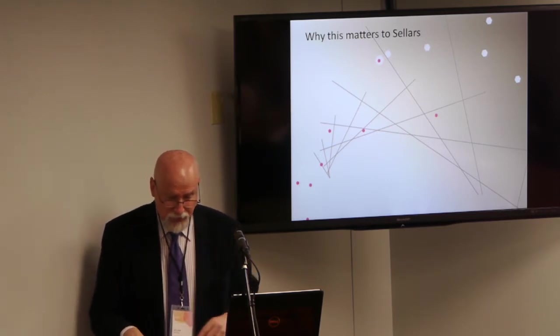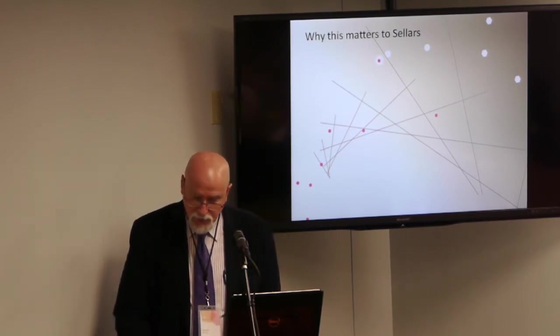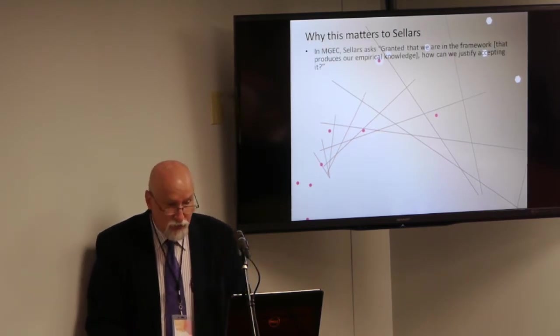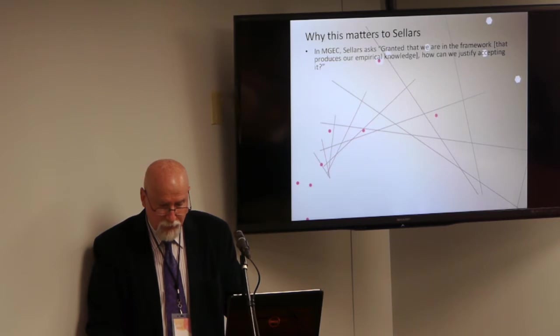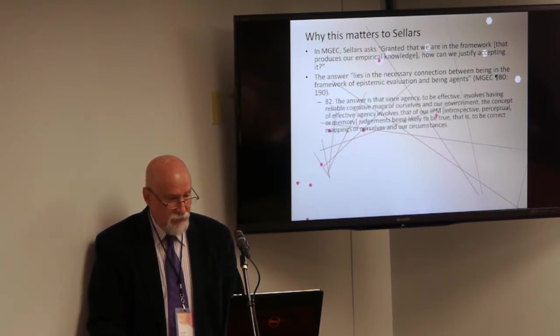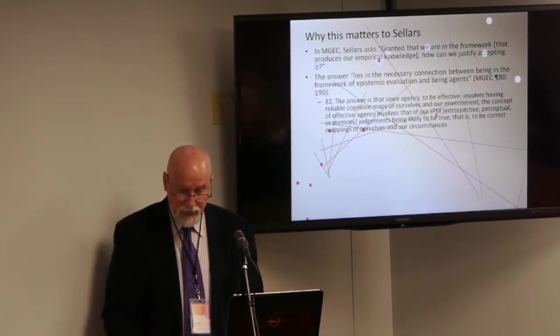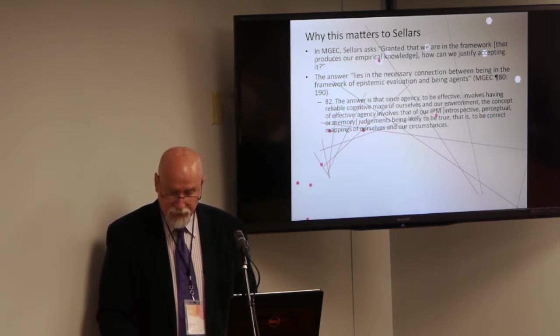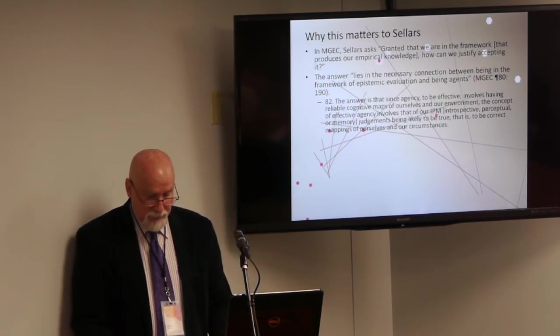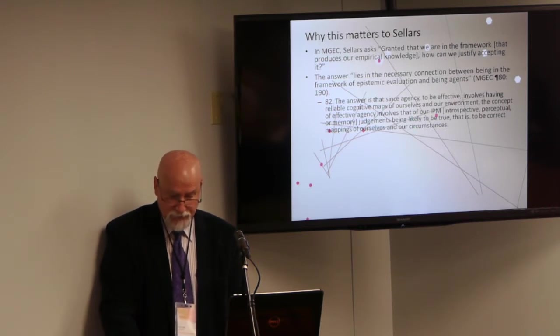Recall, if you will, or if you can, the rather difficult discussion in more on givenness and explanatory coherence, one of his more pellucid creations, concerning the answer to the skeptical question, granted that we are in the framework that produces our empirical knowledge, how can we justify accepting it? Sellars tells us that the answer lies in the necessary connection between being in the framework of epistemic evaluation and being agents. Right? The answer is that since agency, to be effective, involves having reliable cognitive maps of ourselves and our environment, the concept of effective agency involves that of our IPM, that's introspective perceptual and memory judgments, being likely to be true, that is, to be correct mappings of ourselves and our circumstances.